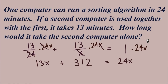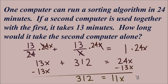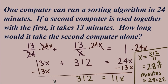We multiply every term by the LCD, which is 24x. The 24s cancel in the first term, leaving 13x. In the second term the x's cancel, and 13 times 24 gives us 312. The right side: 1 times 24x equals 24x. Subtracting 13x from both sides gives 312 equals 11x. Dividing both sides by 11 gives 312 over 11, or the mixed number 28 and 4-elevenths minutes. That 4-elevenths of a minute is about 22 seconds, so the second computer would run this algorithm in 28 minutes and 22 seconds.